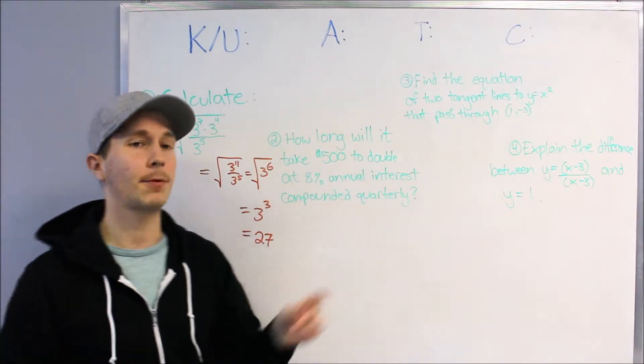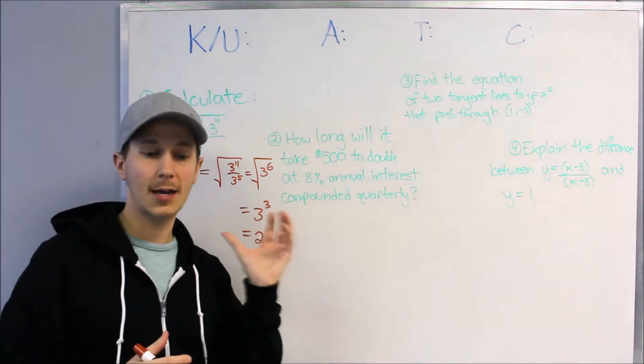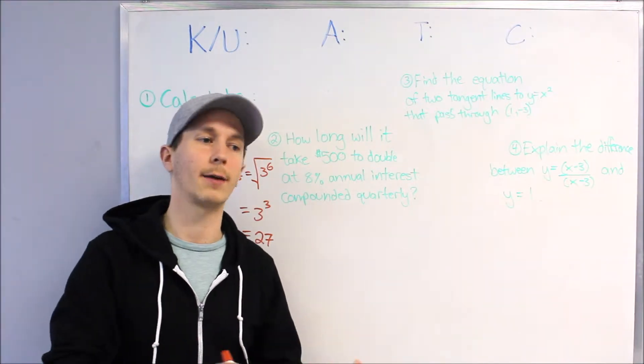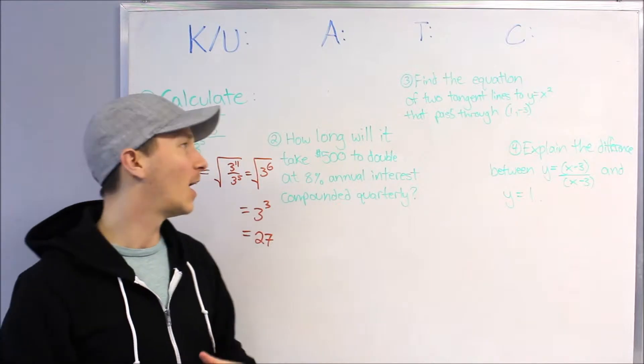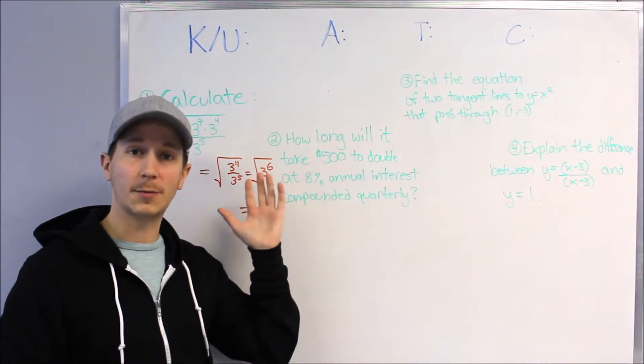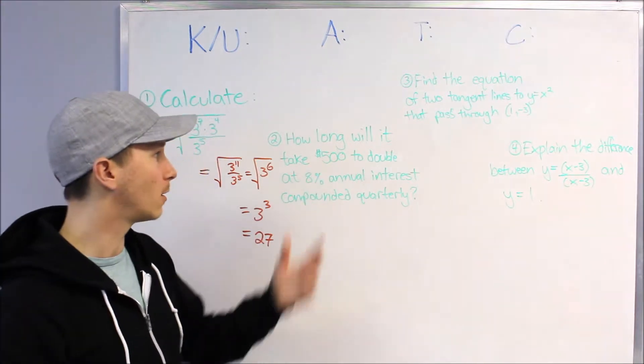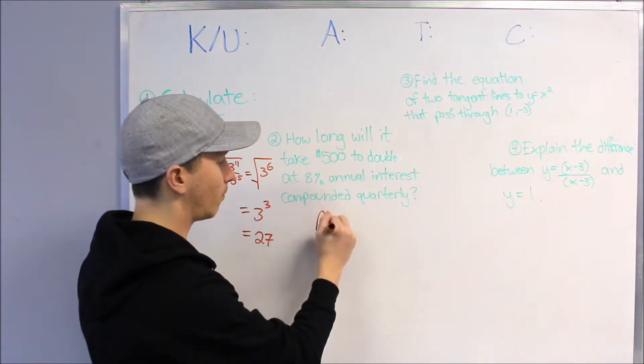Second part is Application. There's often quite a few marks given out in this category, as you would expect. It's taking that knowledge and applying it to some sort of situation, so you can think about like roller coaster questions or ferris wheel questions with graphs. This one's another exponential question, but using interest and money.